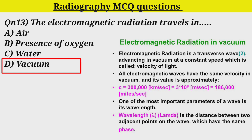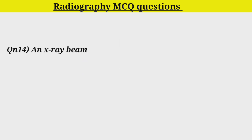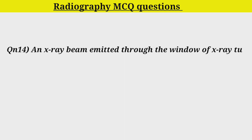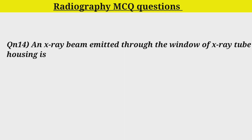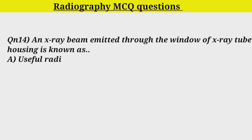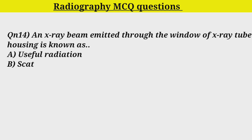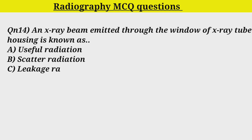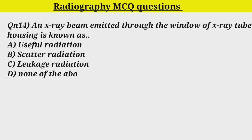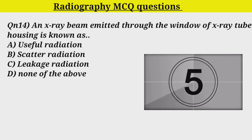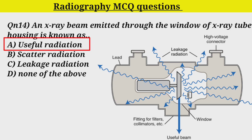Q14. An X-ray beam emitted through the window of X-ray tube housing is known as: Option A. Useful Radiation. Option B. Scatter Radiation. Option C. Leakage Radiation. Option D. All of the above. Correct answer is Useful Radiation.